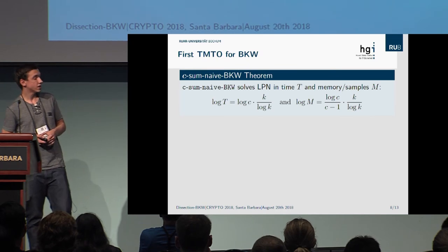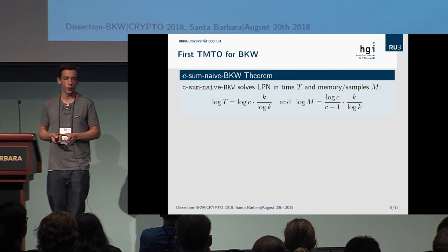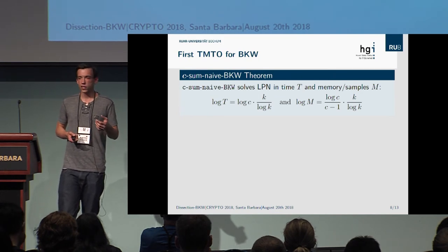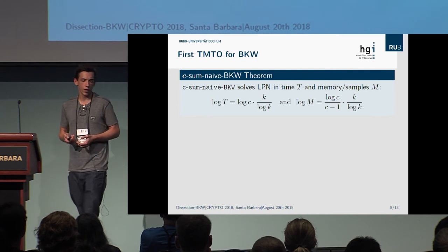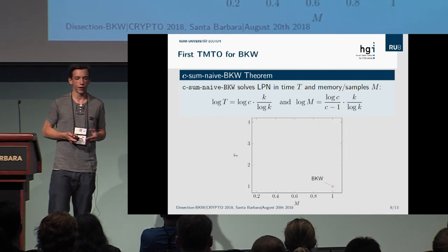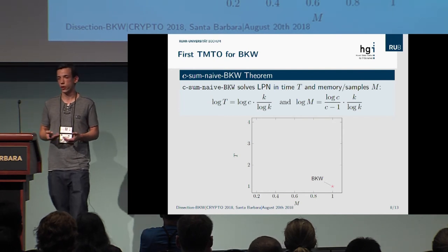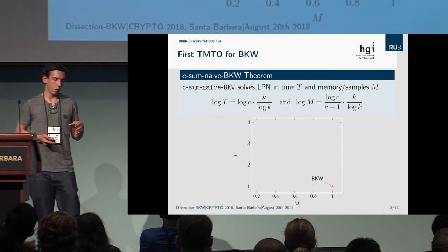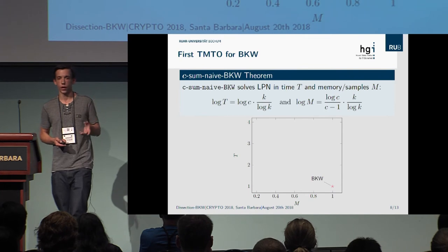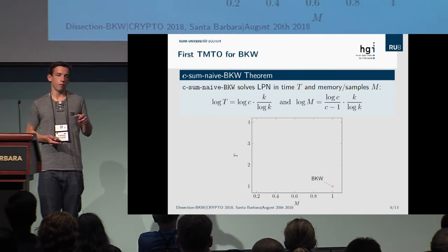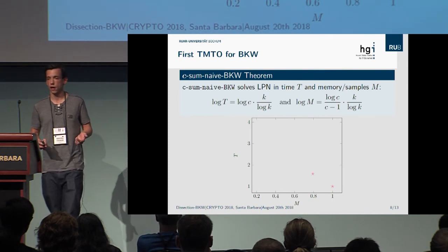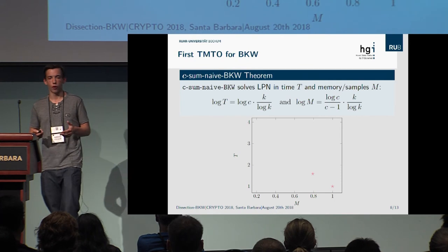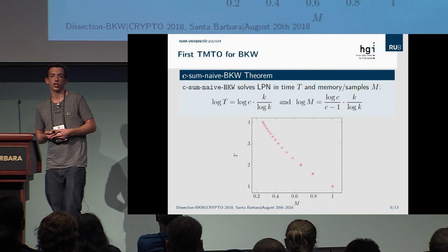Using this naive algorithm inside our framework gives an algorithm solving the LPN problem with specific time and memory complexities. In comparison to original BKW, we achieve a log C factor in the time exponent — increasing logarithmically in C — while the memory exponent decreases nearly linearly in C. Illustrated in a graph of time versus memory, the coordinate (1,1) corresponds to original BKW. Plugging in C=2 recovers BKW, and C=3 gives a point to the upper left, reducing memory while increasing time, as expected from a time-memory trade-off.